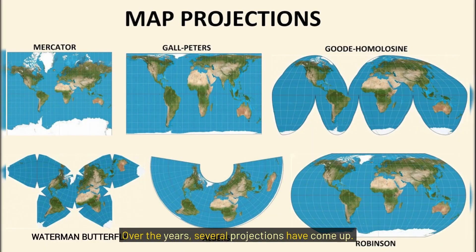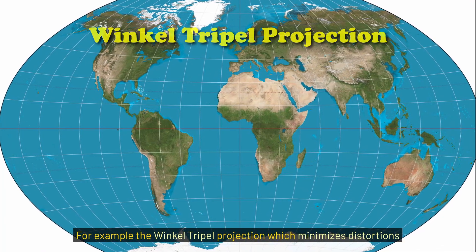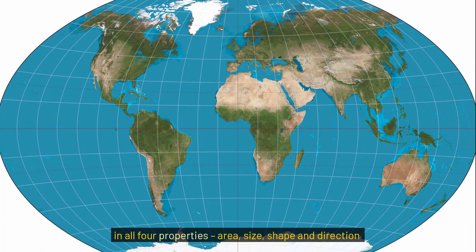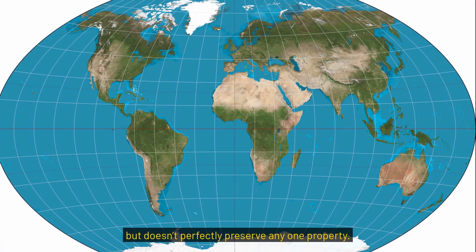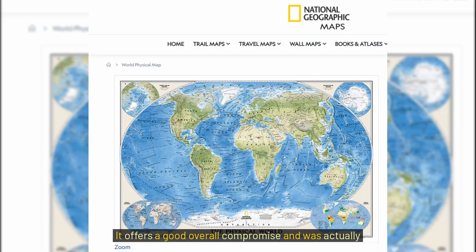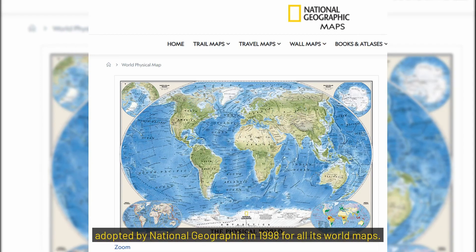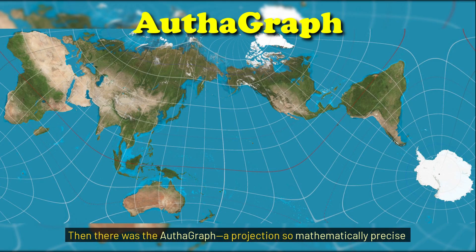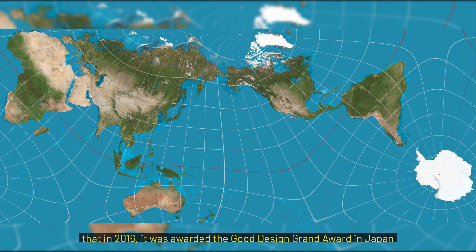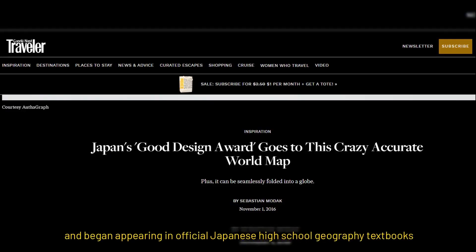Over the years, several projections have come up. For example, the Winkel Tripel projection, which minimizes distortions in all four properties — area, size, shape, and direction — but doesn't perfectly preserve any single one. It offers a good overall compromise and was adopted by National Geographic in 1998 for all its world maps. Then there was the Authagraph projection, so mathematically precise that in 2016 it was awarded the Good Design Grand Award in Japan and began appearing in Japanese high school geography textbooks.